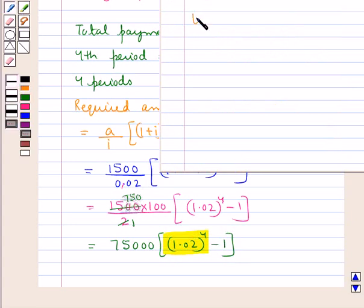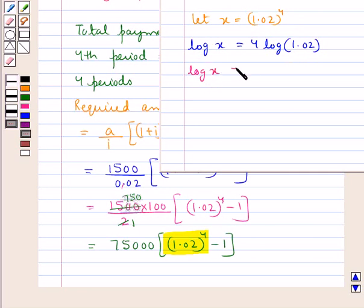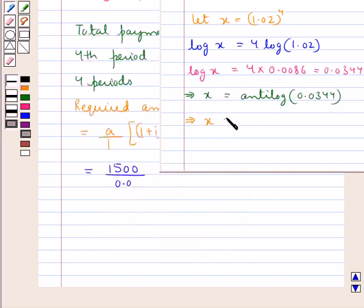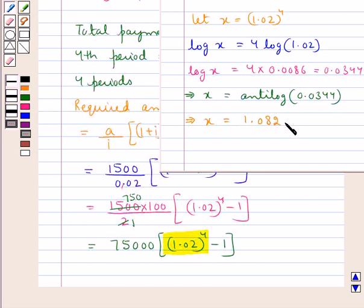For this, we suppose let x be equal to (1.02)^4. Taking log on both sides, we have log x is equal to 4 × log(1.02). Further we have log x is equal to 4 × 0.0086, which is equal to 0.0344. And from here we have the value of x as the antilog of 0.0344, which gives the value of x as 1.082.